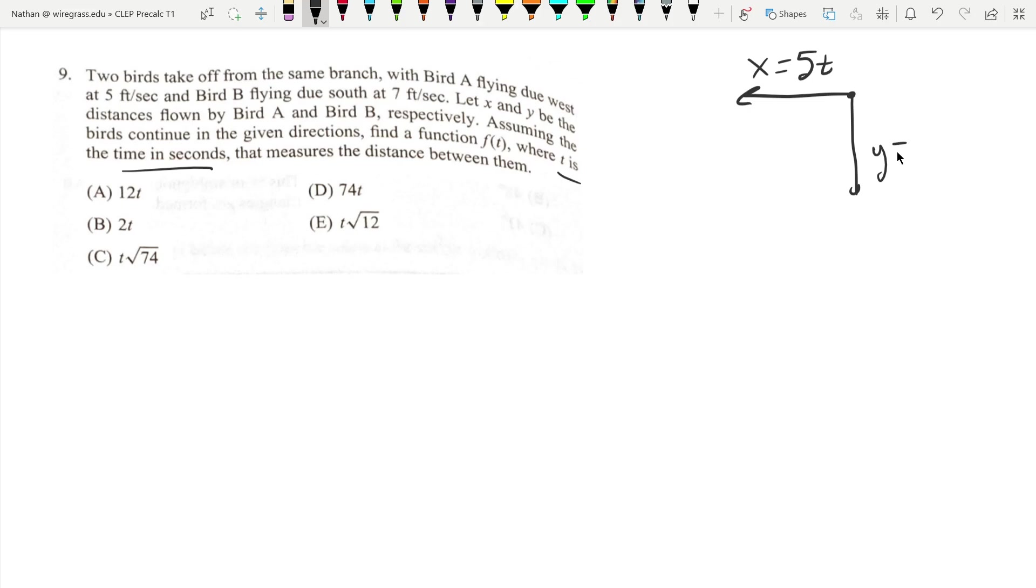Y is going to be seven feet per second times t. That's the distance. I'm finding distance because f of t measures the distance between them. The distance between them is this distance here.